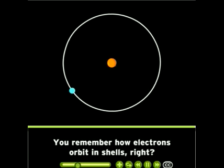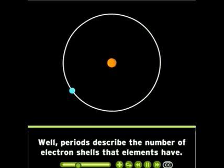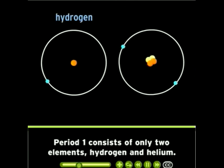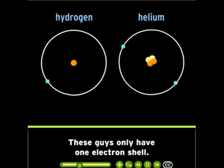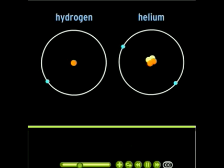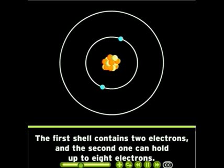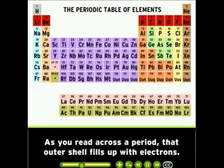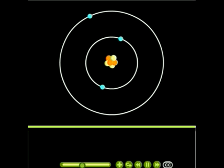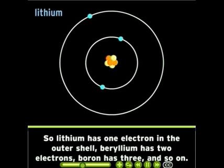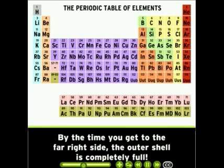Periods describe the number of electron shells that elements have. Period one consists of only two elements, hydrogen and helium — these guys only have one electron shell. Period two contains elements with two electron shells; the first shell contains two electrons, and the second one can hold up to eight electrons. As you read across a period, that outer shell fills up with electrons. So lithium has one electron in the outer shell, beryllium has two, boron has three, and so on. By the time you get to the far right side, the outer shell is completely full.